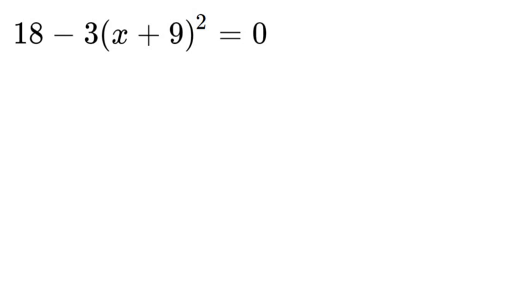So what we got is 18 minus 3 times x plus 9 which is squared and that is equal to 0.